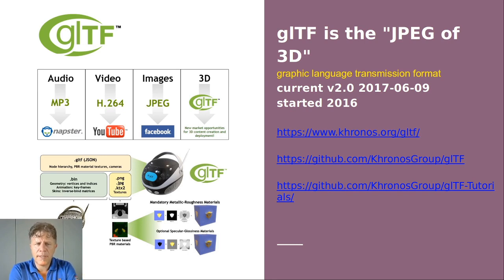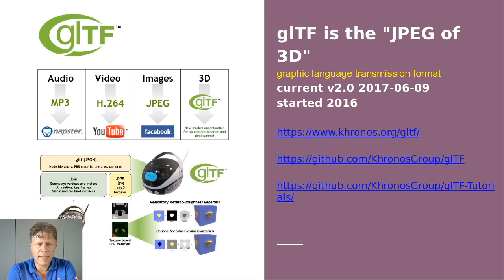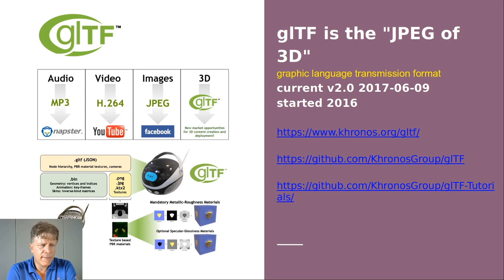GLTF defines a transmission format for 3D scenes. The scene structure is described with a JSON file, which is very compact and can easily be parsed. 3D data of the objects are stored in a form that can be directly used by the common graphics API. Each node has base color, metalness, roughness, reflectivity, diffuse color, specular color, glossiness, and many other graphic attributes.